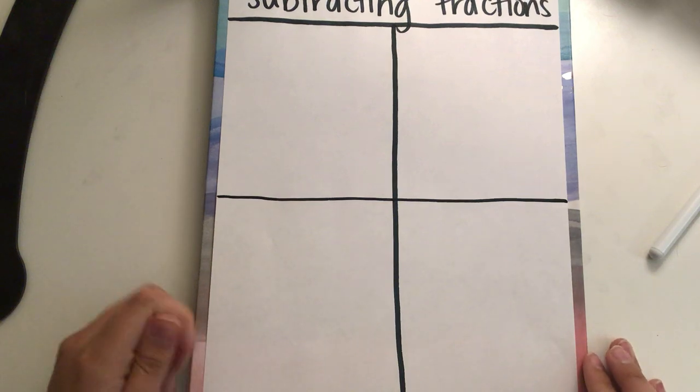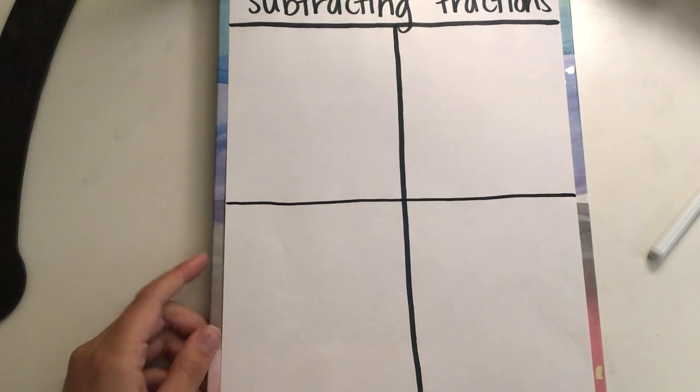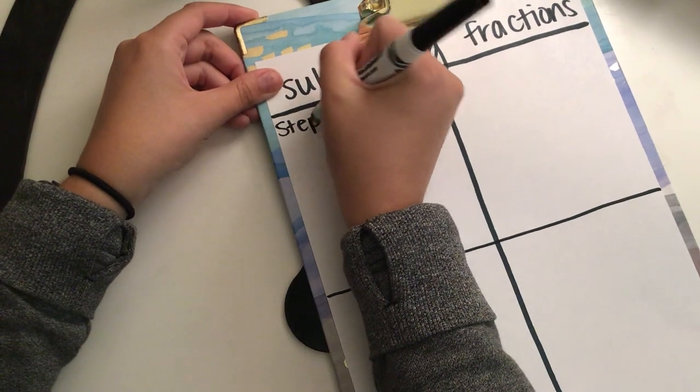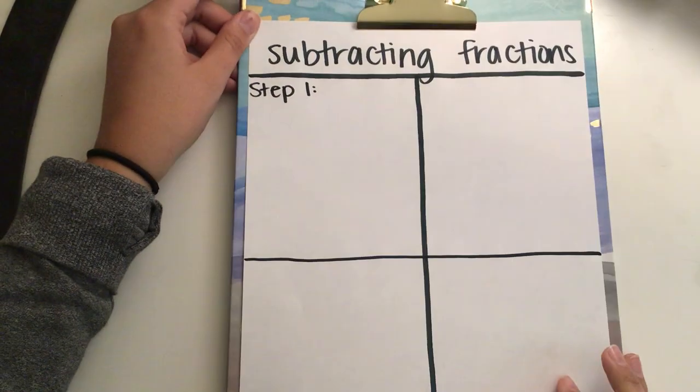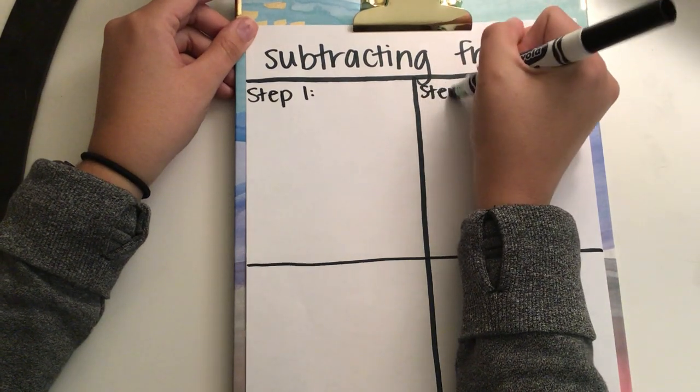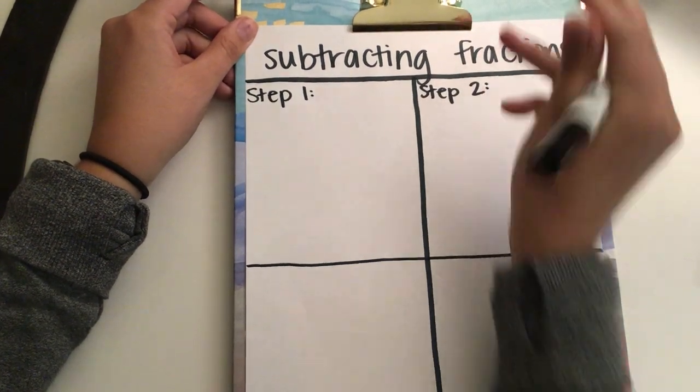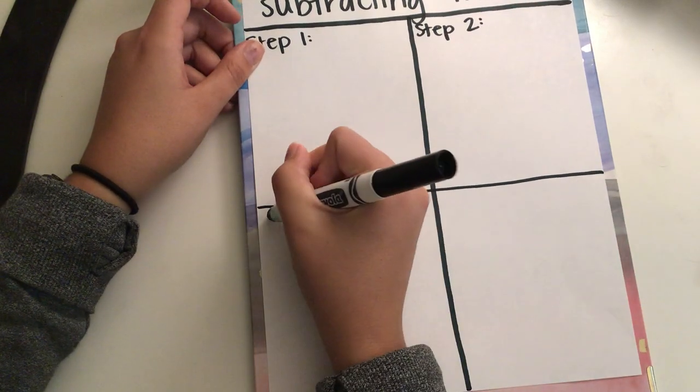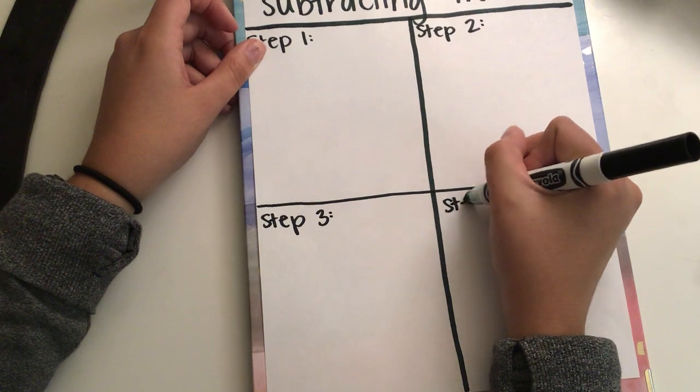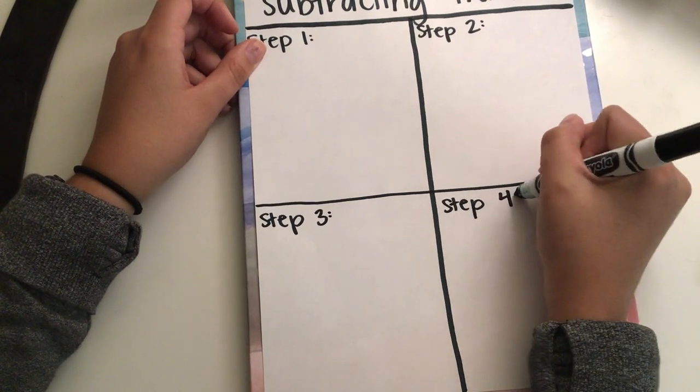The only thing that we have left to do is just to write out our step one, step two, step three, step four. So in this box, you're going to write step one. In our upper right-hand corner, you're going to write step two. Then we've got step three in the bottom left and step four in our last box.